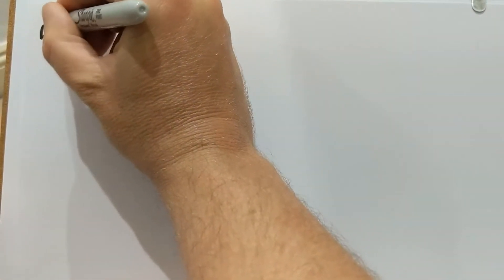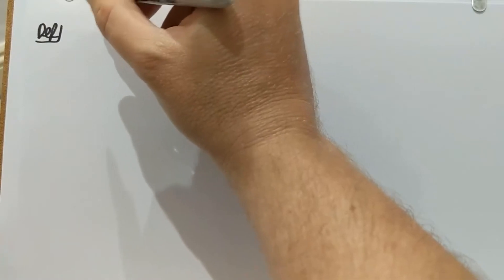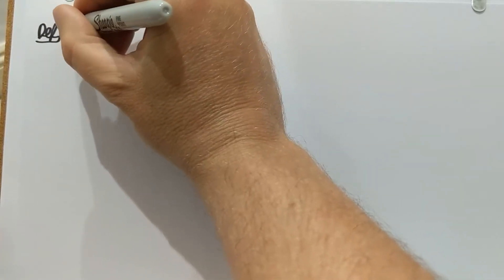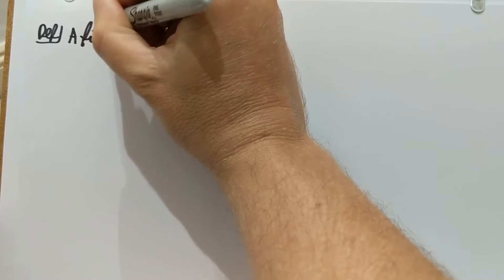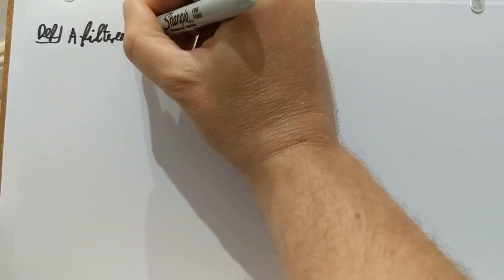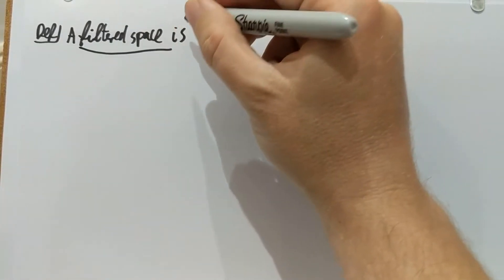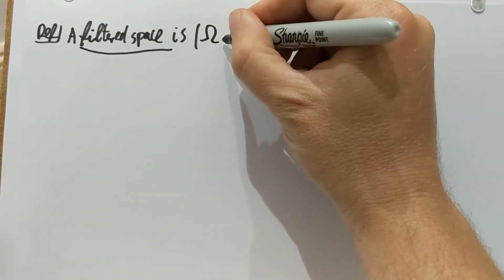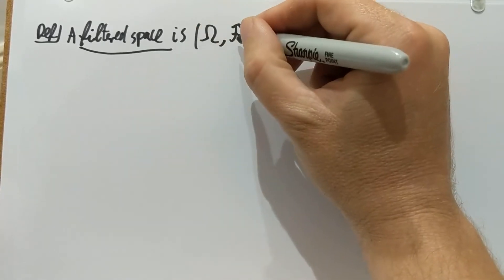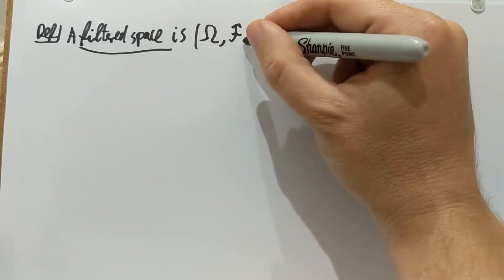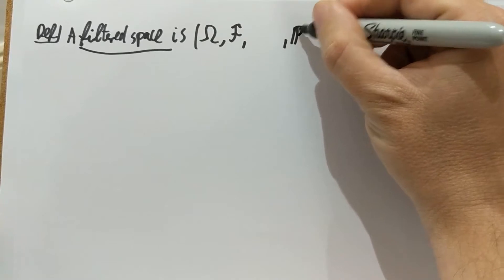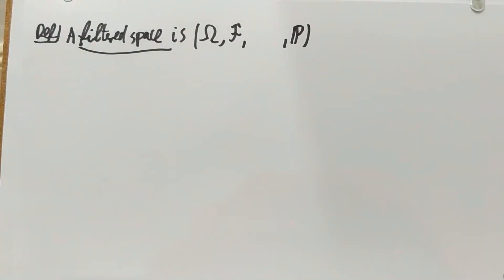So now I can tell you finally what a martingale is. To do that I need a few definitions first. My first definition is a filtered space, which involves the following objects. Let's take a sample space, take a sigma algebra on it, and take a probability measure on it. So far everything is as usual.